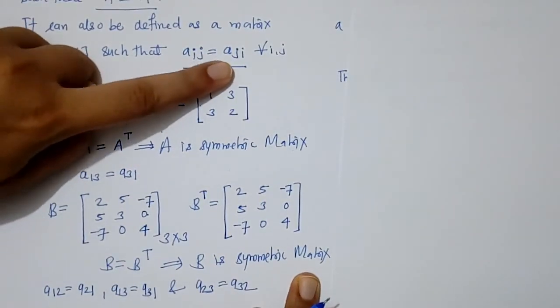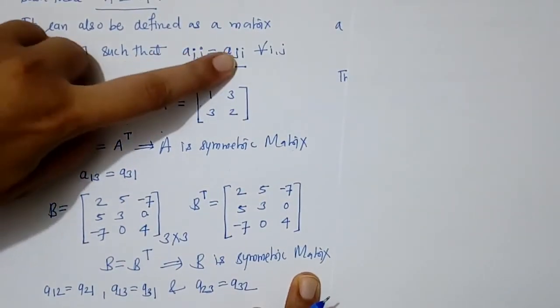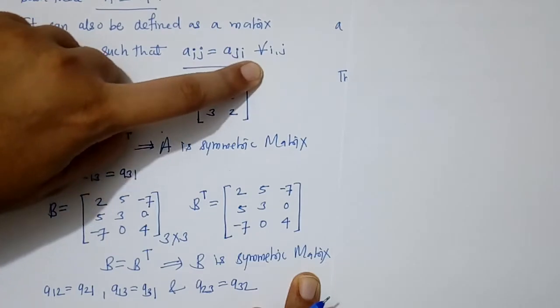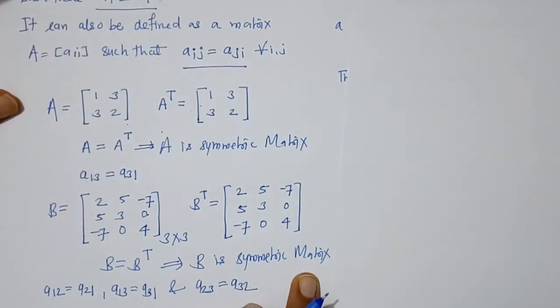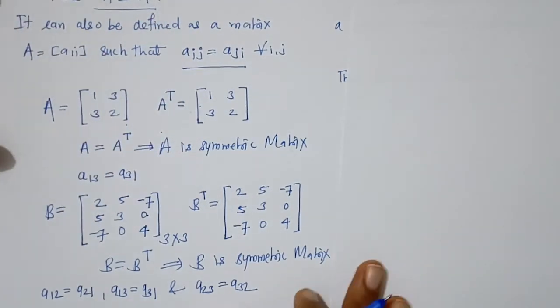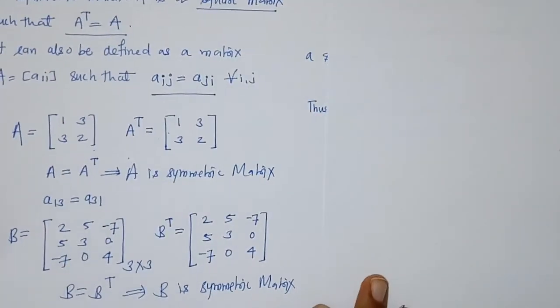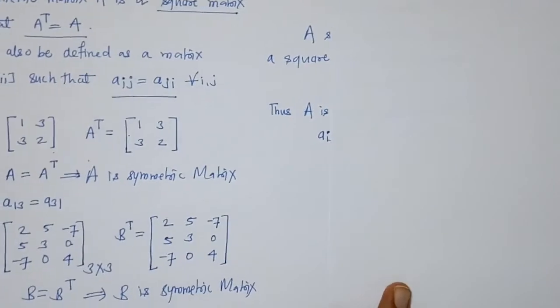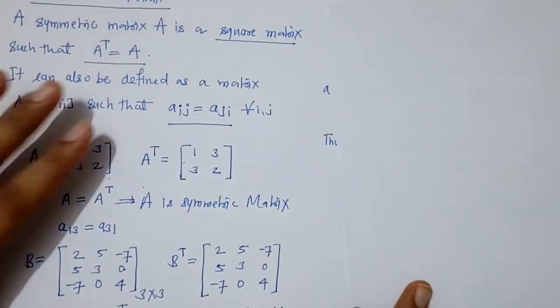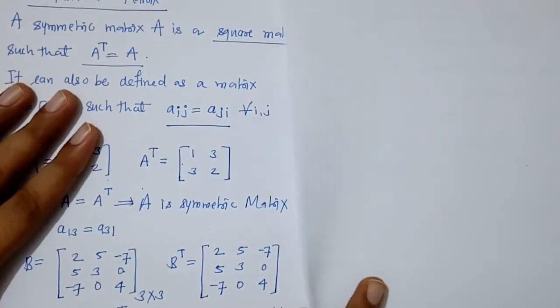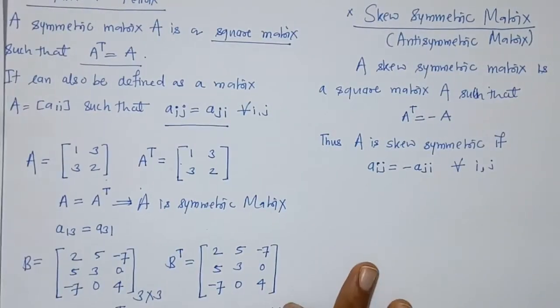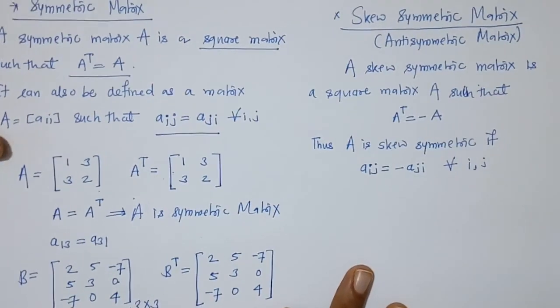We can verify element-wise: A_12 equals A_21, A_13 equals A_31, and A_23 equals A_32. So matrix B is a symmetric matrix for which A_ij equals A_ji.